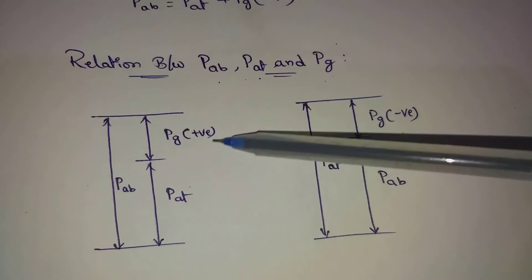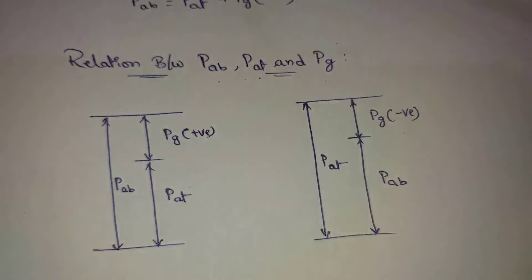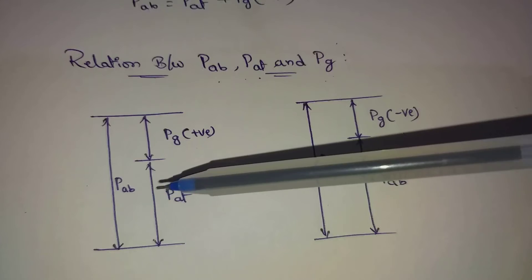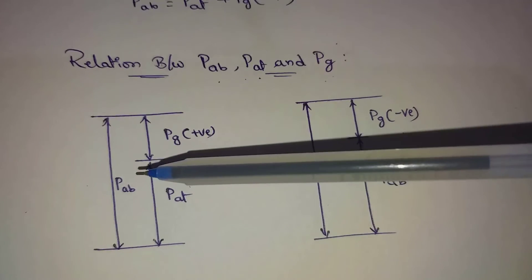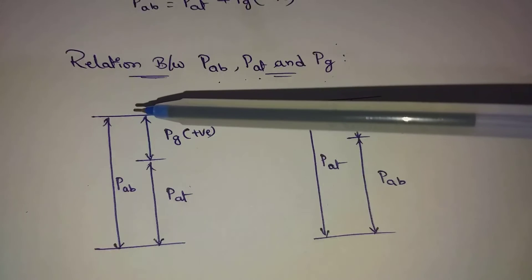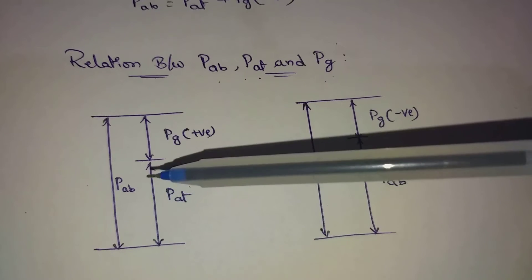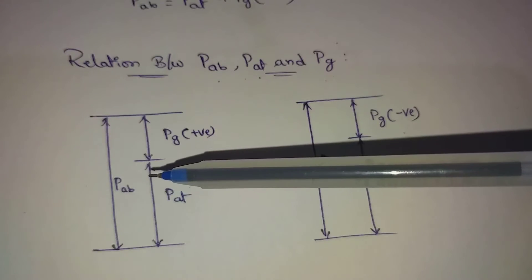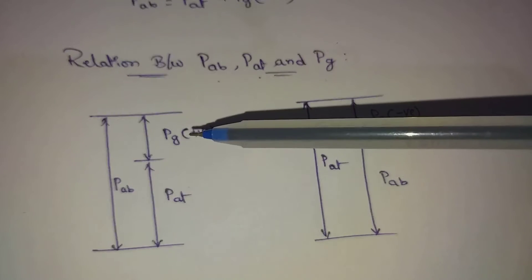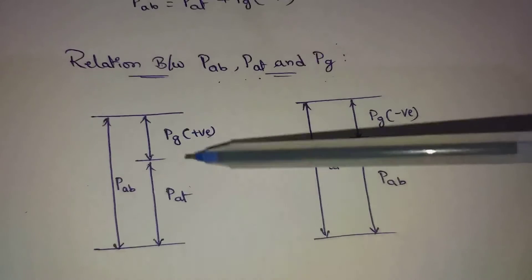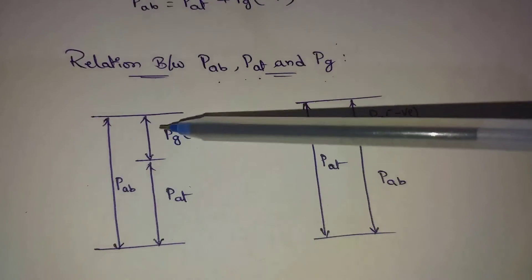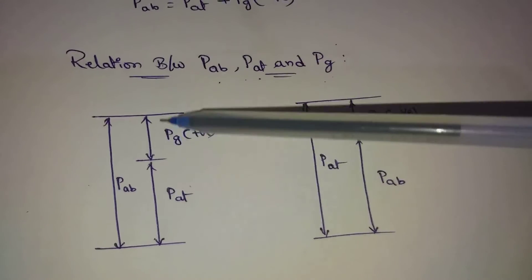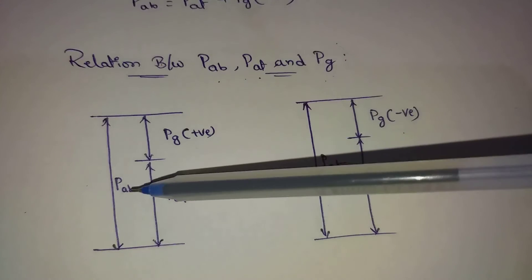First, the positive gauge pressure and absolute pressure relation. The standard formula is: absolute pressure equals atmospheric pressure plus gauge pressure. This is the actual formula. Here, atmospheric pressure plus gauge pressure is positive, giving us the total absolute pressure.